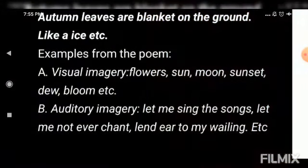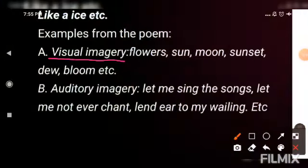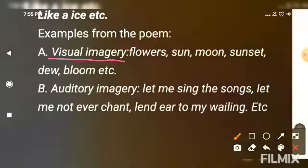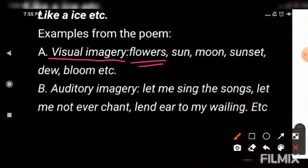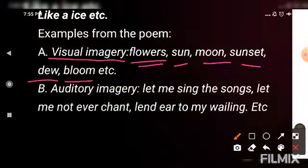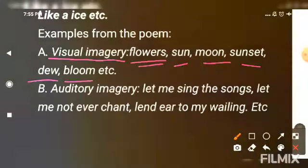Visual imagery is something related to the eye — what you can see. Whenever a writer or poet describes any scenery, you feel as if you have also seen it. You say: mujhe bhi visualize hua, mujhe bhi pictures aayi. For example, when I say 'flower', you create an image of a flower in your mind. Words like sun, moon, sunset, dew, bloom — these are all terms used in the poem. With these words we are able to visualize flowers, sun, moon, sunset, dew, and bloom. It is as if we have seen these things with our own eyes.